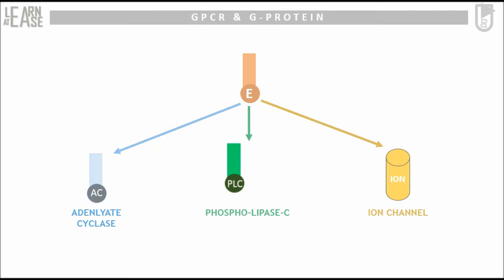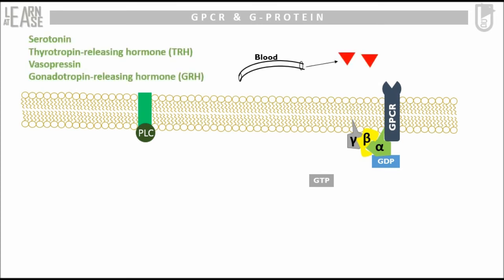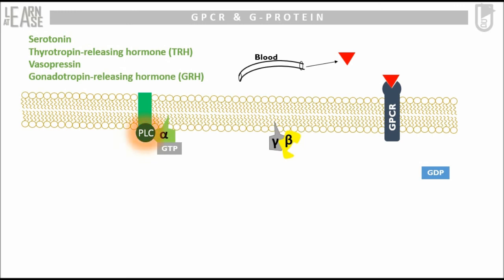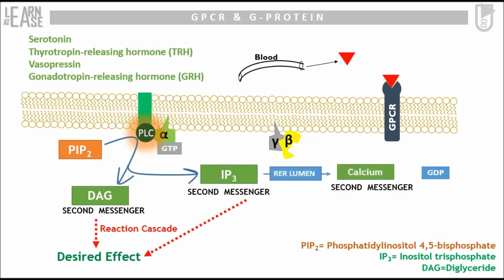Now let us see the functioning of phospholipase C. The assembly with phospholipase C effector in its inactive form is shown. Hormones such as serotonin, vasopressin, and gonadotropin-releasing hormone can activate the GPCR belonging to this assembly. When these specific ligands bind to GPCR, the conformational change allows the alpha subunit to replace GDP with GTP, activating the cycle and eventually activating phospholipase C. Phospholipase C cleaves phosphatidylinositol-4,5-bisphosphate into inositol trisphosphate (IP3) and diacylglycerol (DAG). Both molecules act as second messengers and induce cascades of reactions. IP3 also causes calcium to be released from the lumen of the endoplasmic reticulum, where calcium also acts as a second messenger. Thus, this system induces three types of second messenger to drive different reaction cascades.